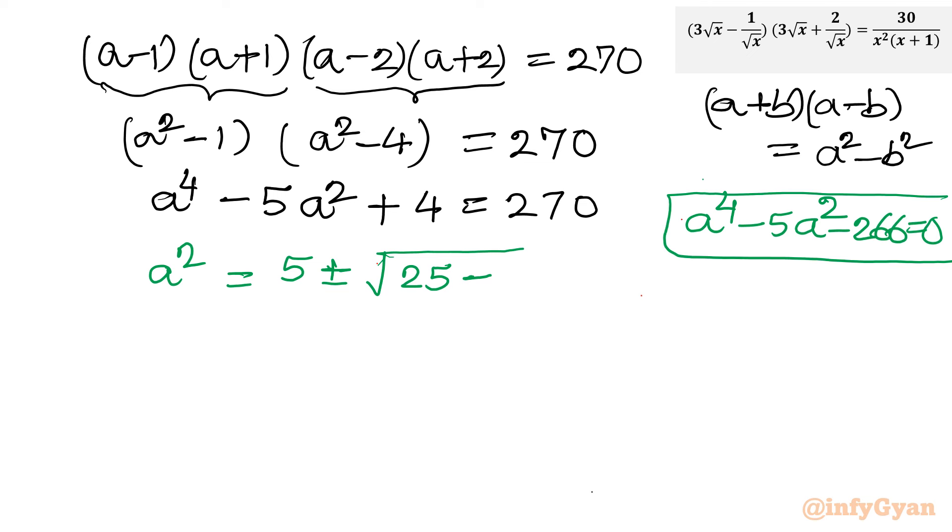a² equals -b, so 5, plus minus under the root b², which is 25, minus 4ac. Now c is -266, once I take product with 4 the sign will be plus. So 266 times 4 is 1064, divided by 2a. 5 plus minus square root of (25 plus 1064), which gives us 1089, divided by 2. The square root of 1089 is 33 over 2.